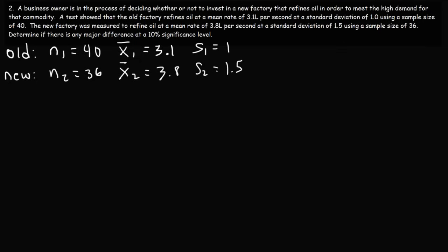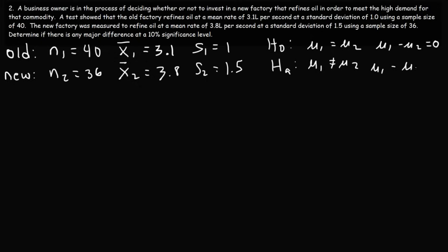Determine if there is any major difference at a 10% significance level. The null hypothesis is that the two factory means are equal — mu1 equals mu2, or mu1 minus mu2 equals 0. The alternative hypothesis is that they are not equal — mu1 minus mu2 does not equal 0. A test is being conducted to see if there is a major difference, so the alternative hypothesis reflects the belief that they are different.